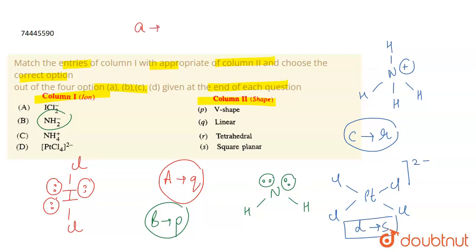The correct matches are: A is matching with Q, B is matching with S, C is matching with R, and D is matching with T.